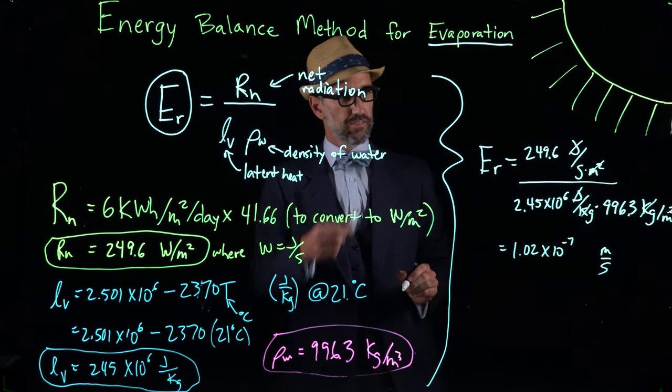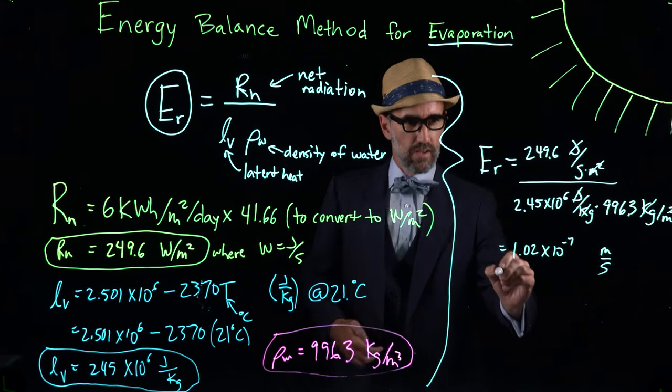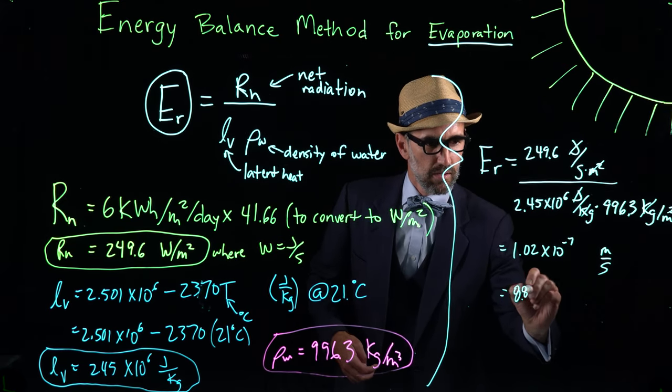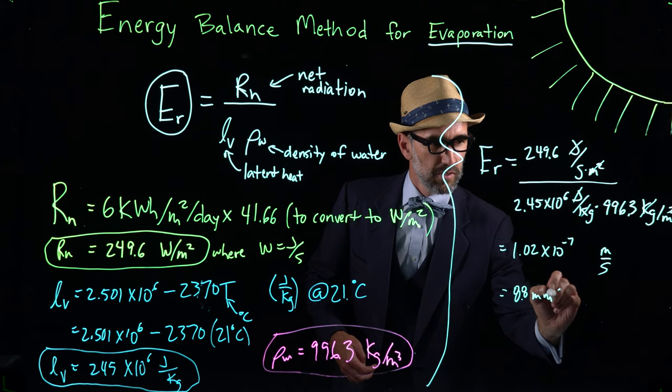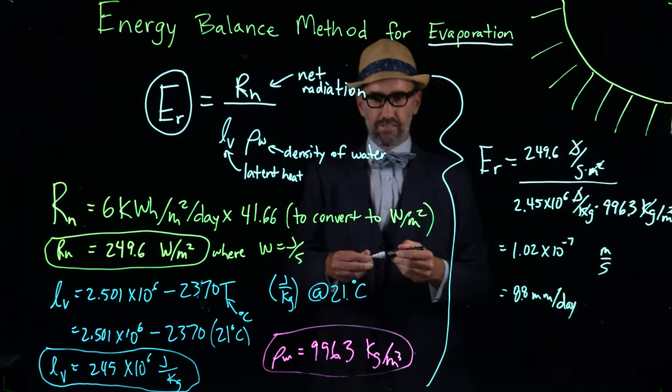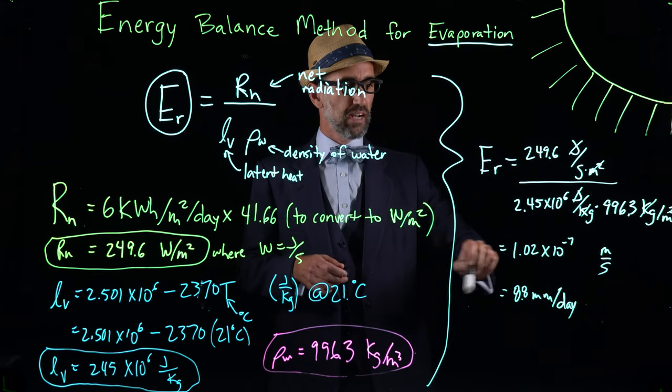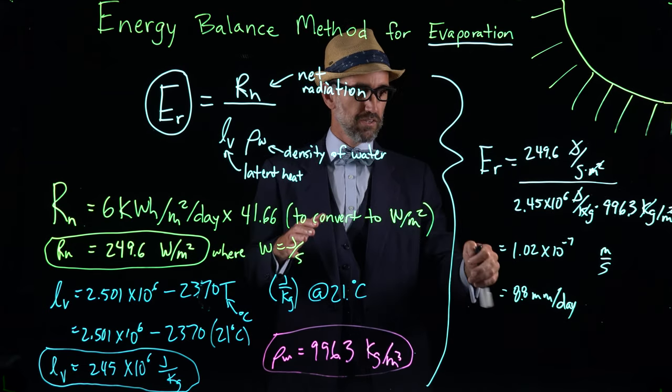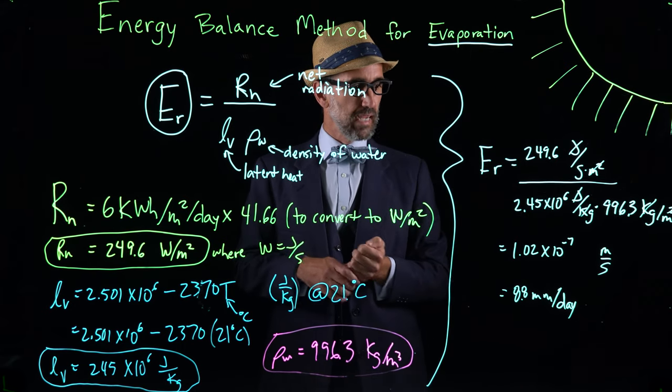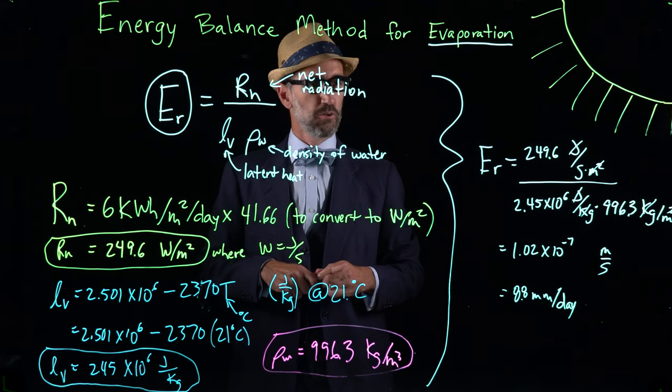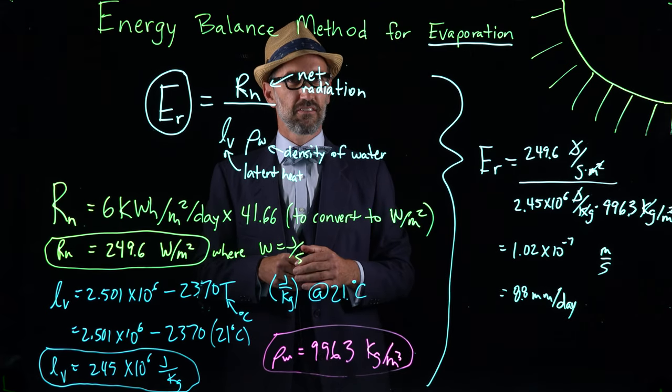So to put that into units that might mean a little bit more to us, that's 8.8 millimeters per day. So what that means is that in Phoenix, the sun is evaporating water as a long-term average at a rate of 8.8 millimeters per day. And with that, we'll move on to how wind affects reservoirs.